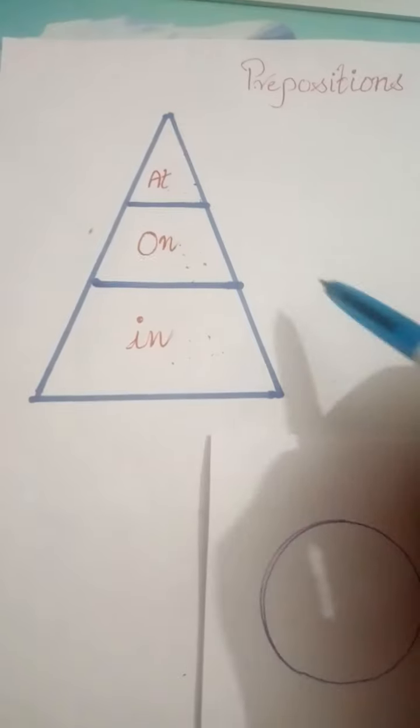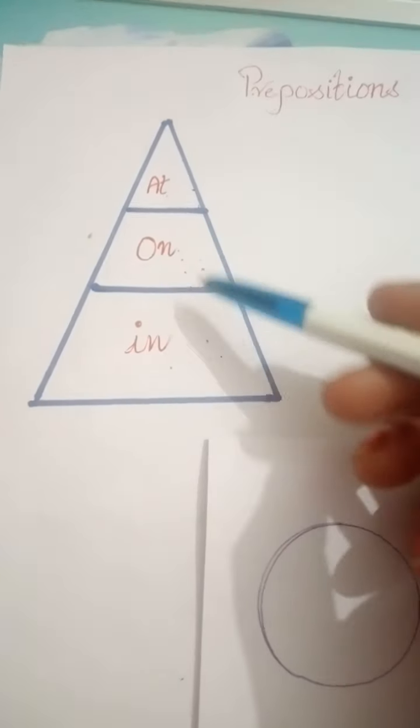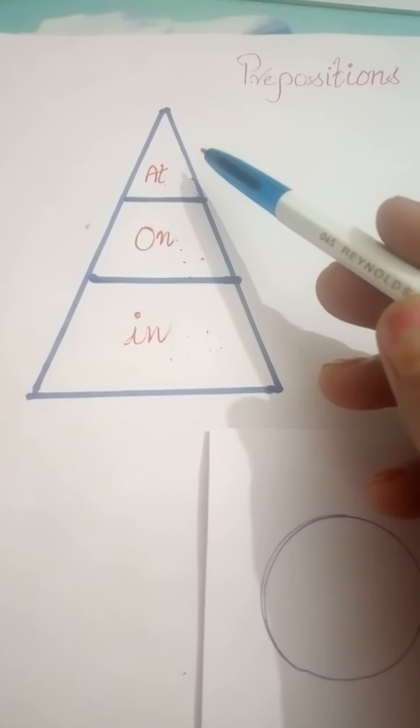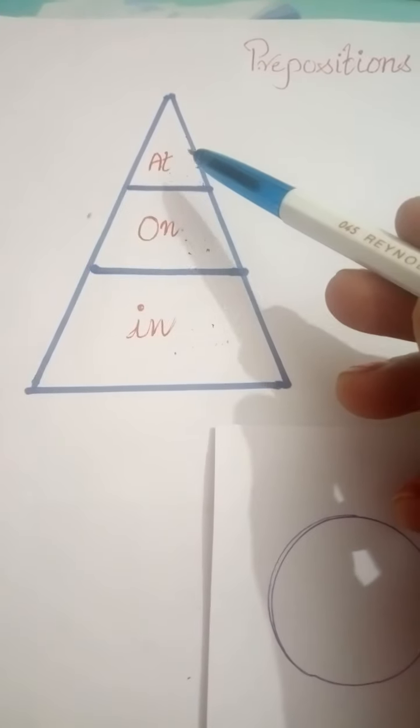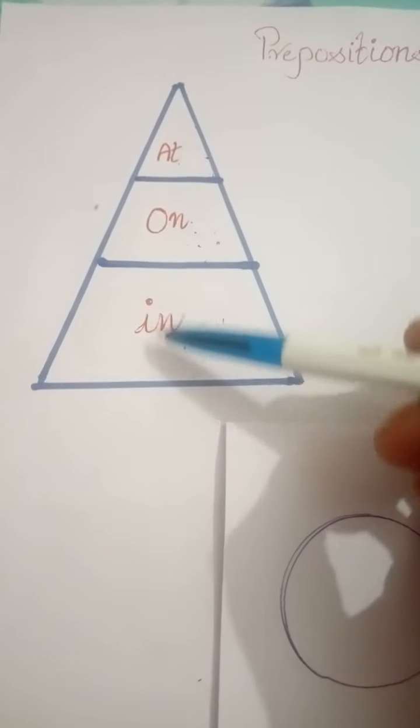Now look, we have divided this triangle into three parts. The first one is a very narrow part, the second one is a little bit broader than the first one, and the third one is widest.